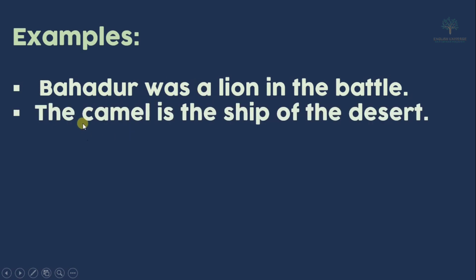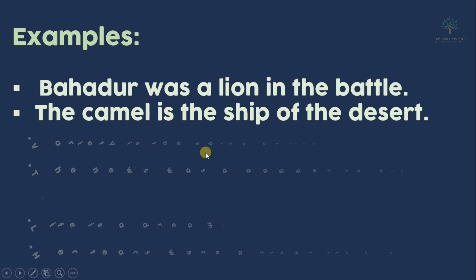Second example: the camel is the ship of the desert. Here the camel is compared with the ship. Jaise ship ocean ko cross kar jata hai, usi tarah se camel poore desert ko cross kar jata hai. Yahaan par word of comparison use nahin kia gaya hai. Isi liye yahaan metaphor hai.